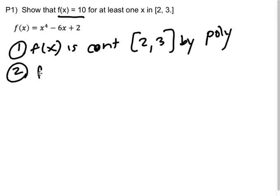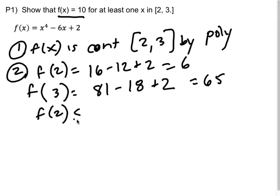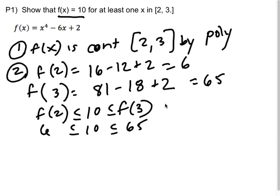Two, f(2) is going to be 16 minus 12 plus 2, which is a 6. f(3) is going to be 81 minus 18 plus 2, which I don't really feel like doing. 61, 63, 65. Cool. So I get 65 and then I say, oh, that's cool. f(2) is smaller than or equal to 10, which is smaller than or equal to f(3), because remember f(2) was a 6 and then 10 and 65. Great. Cool. Okay. So check.